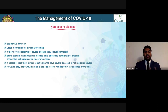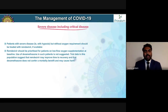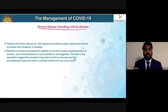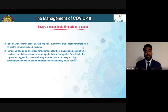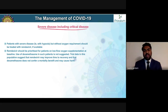Some non-severe patients with lab abnormalities associated with progression to severe disease can be treated similarly to severe patients, but they would likely not be eligible for remdesivir as they are not requiring oxygen. For patients with severe disease requiring only low-flow oxygen, remdesivir should be prioritized. Dexamethasone is not really suggested in such patients.